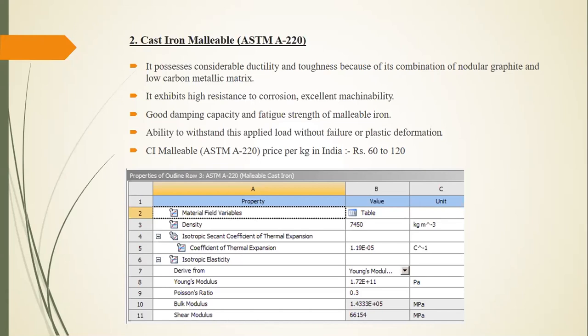Malleable cast iron has good damping capacity and fatigue strength, which is important since tractors are heavily loaded and typically lack springs. It is useful for long service life and highly stressed parts. The strength of a material is its ability to withstand applied loads without failure or plastic deformation. It is also applicable for automobile parts, steering gears, axle bearings, and housing components.